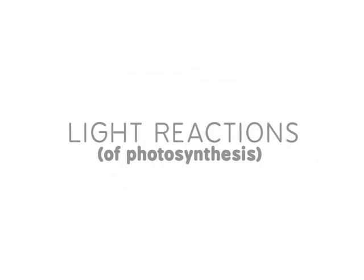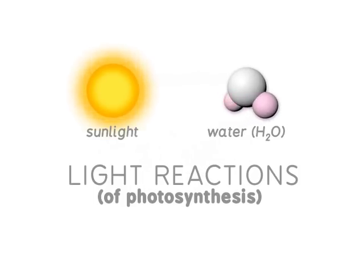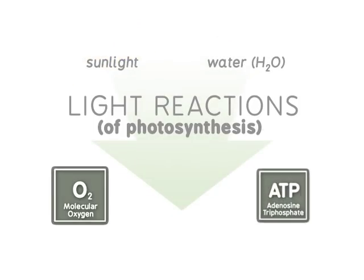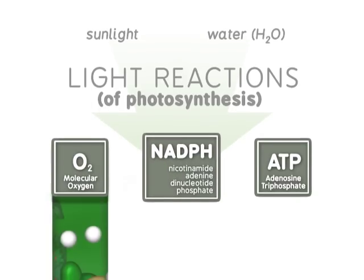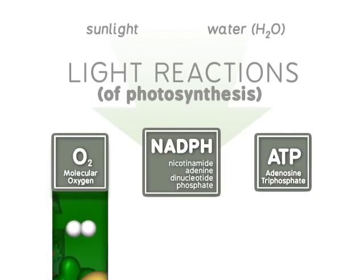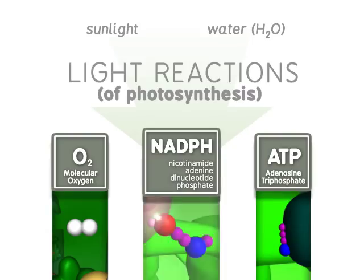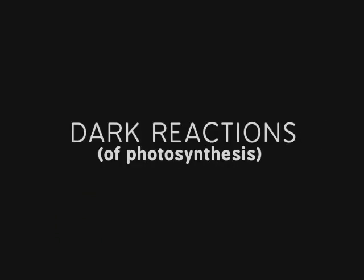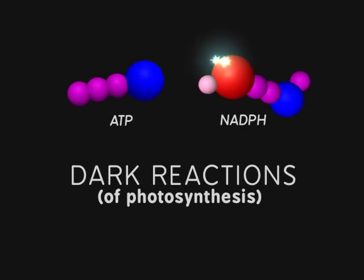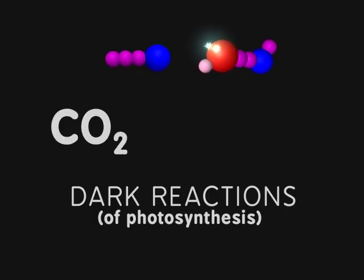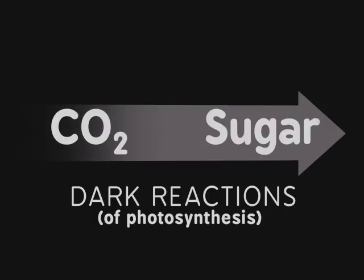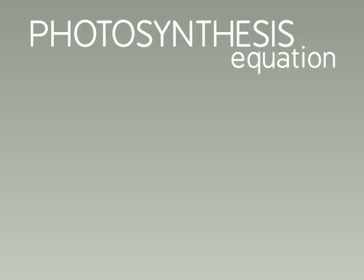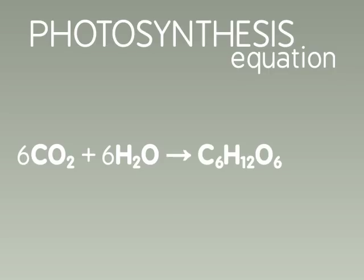During the light reactions, sunlight and water are used to make molecular oxygen, ATP, and NADPH. The oxygen is a component of the air animals breathe. ATP and NADPH are important energy molecules. During the dark reactions, the ATP and NADPH made in the light reactions are used to fix carbon dioxide into sugars. The overall equation for photosynthesis is: carbon dioxide plus water gives a simple sugar, such as glucose 6-phosphate, plus oxygen.